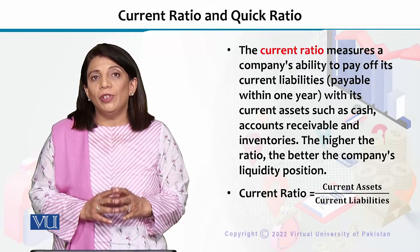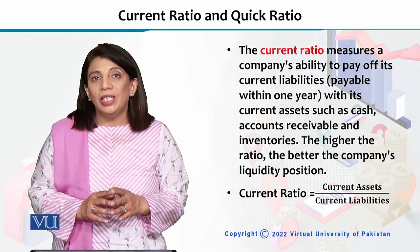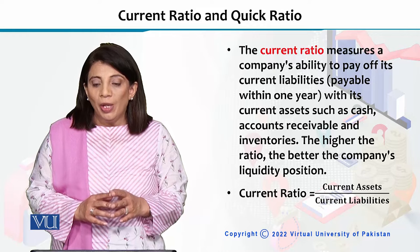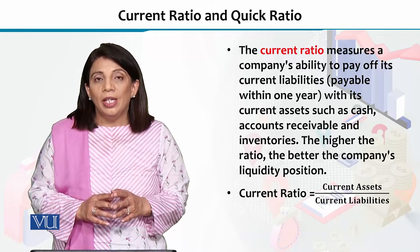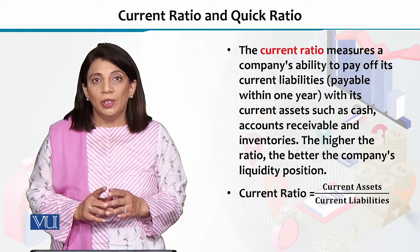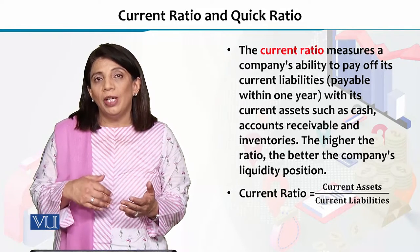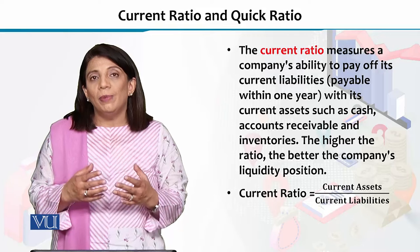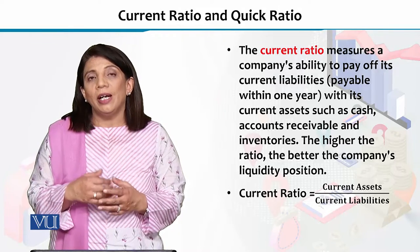If we look at the first one — the current ratio — it basically measures the company's ability to pay off its current liabilities that are payable within one year. So, if you have payments due within one year, what is your ability? We calculate the current ratio to assess that.